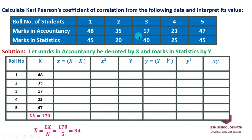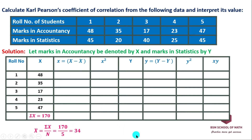This is the actual mean method. If you use the actual mean method, you can solve this problem. The mean is 34, and we substitute this to compute the deviations. So small x equals caps X minus 34.